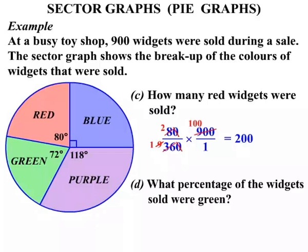The next one. What percentage of the widgets sold were green? There's our green sector. 72 degrees is the angle. We write the fraction first, 72 over 360. It's always over 360. Now to change it to a percentage, to change a fraction to a percentage we can multiply by 100. And again because we're dealing with fractions we'll probably cancel down.